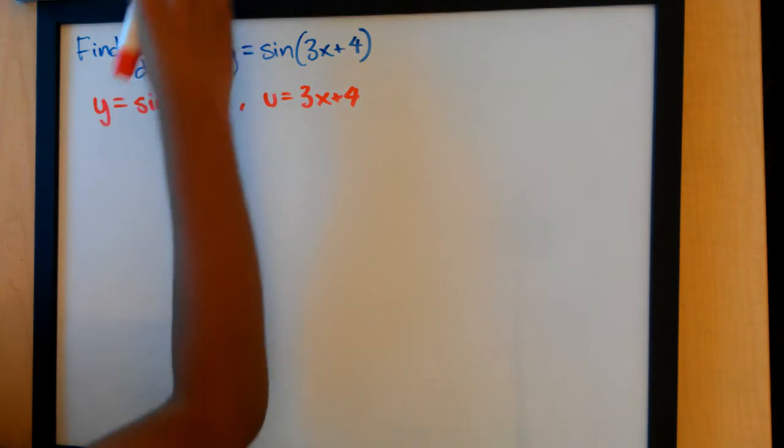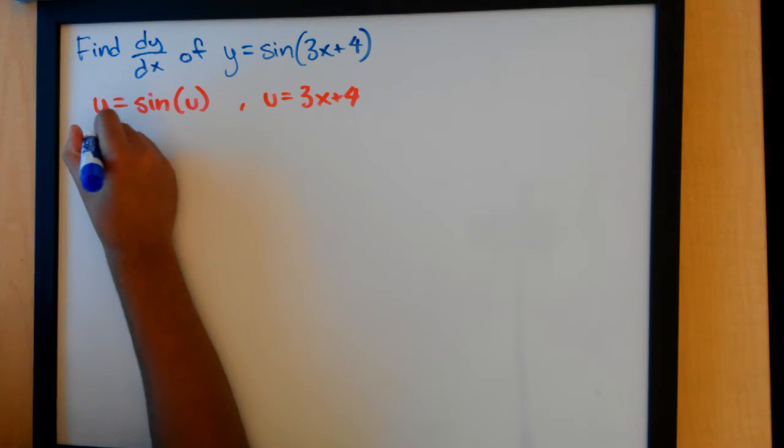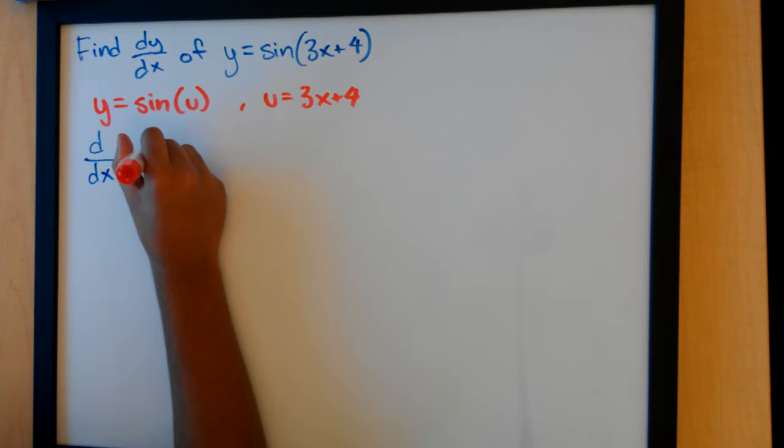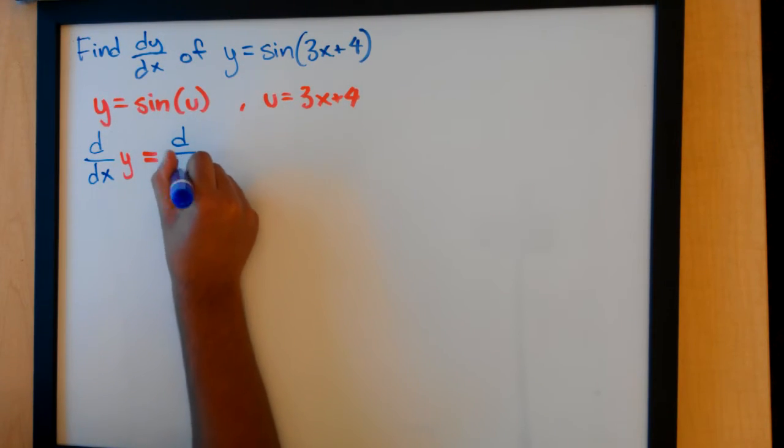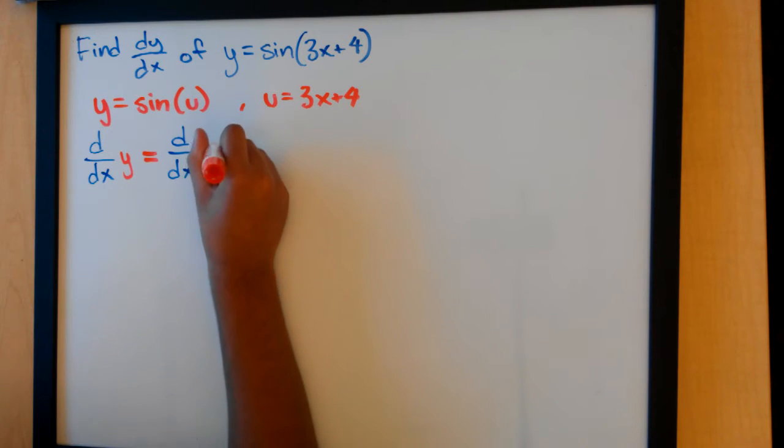And so when we take the derivative of both sides with respect to x, d over dx of y equals the derivative of sine u.